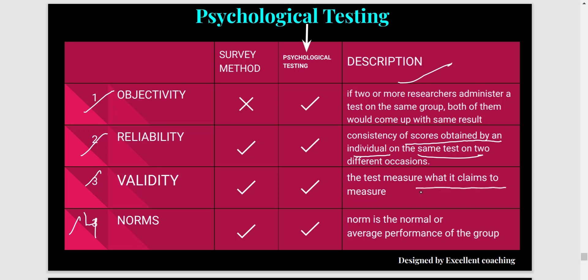Next comes validity, which simply means the test measures what it claims to measure. Suppose you want to measure mathematical skills but you have included difficult English vocabulary in word problems — your test is also measuring vocabulary, which is not its goal. That is not a valid test. An intelligence test that also tests creativity cannot be said to be valid.